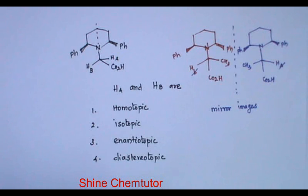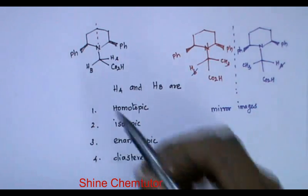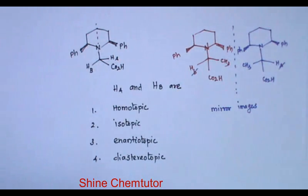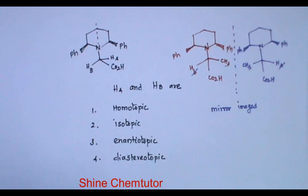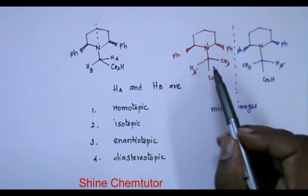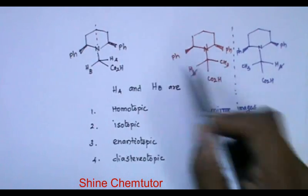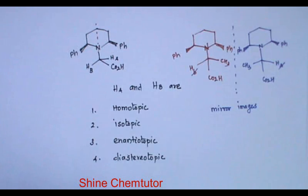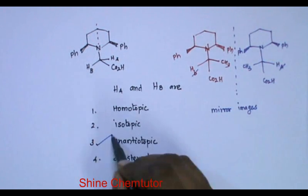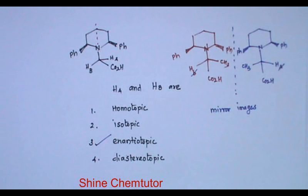So mirror images are known as enantiomers. So they are called enantiotopic hydrogens. HA and HB are enantiotopic. What about the optical activity? Will it be optically active or not? This molecule as well as this will be optically active. The reason is the plane of symmetry is removed when you substitute hydrogen with some other group. So this molecule will be optically active. The answer is HA and HB are enantiotopic.